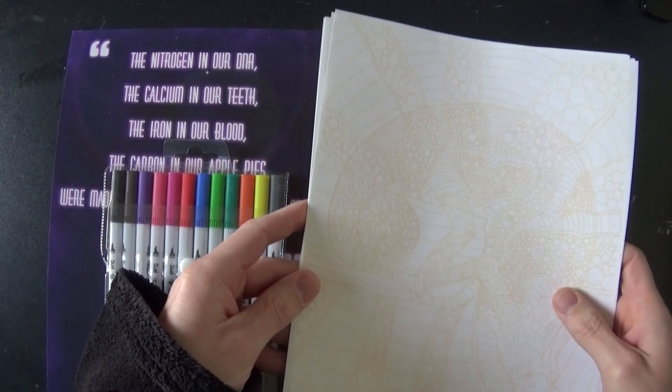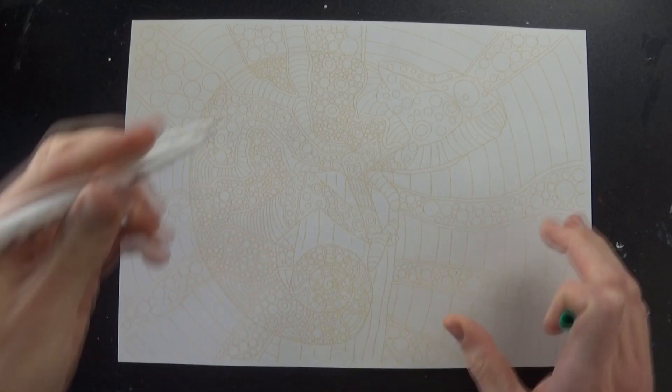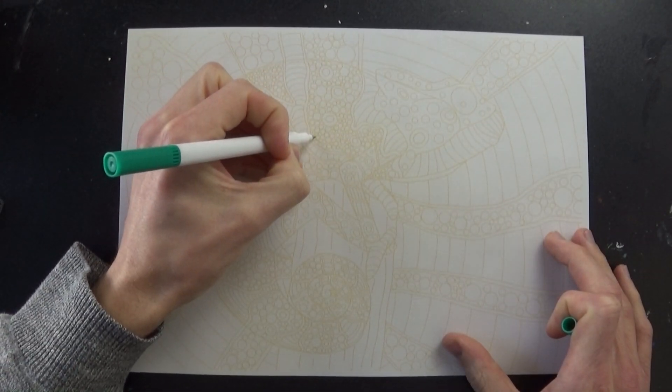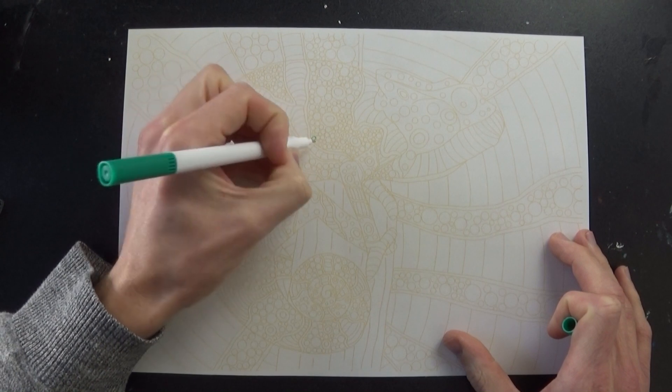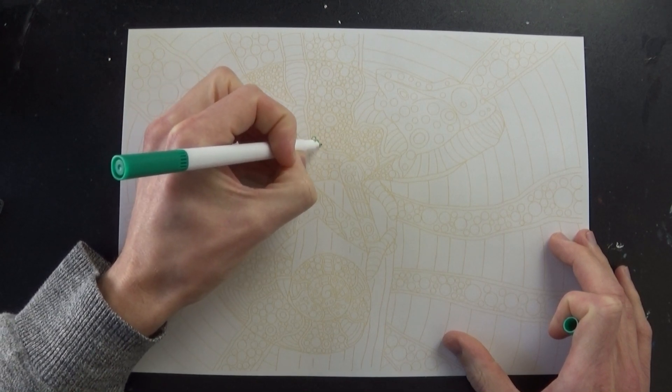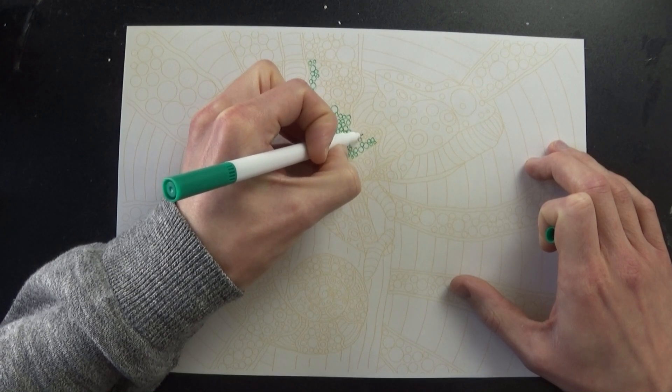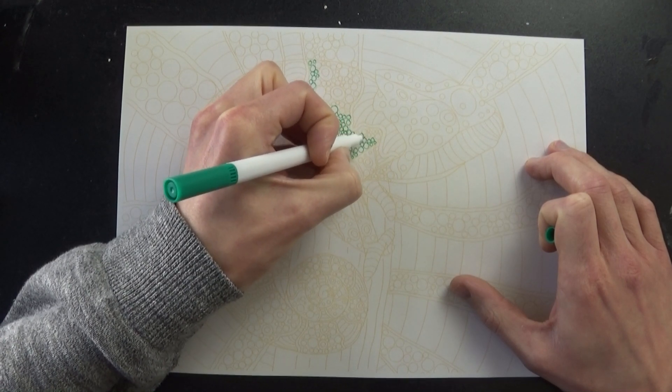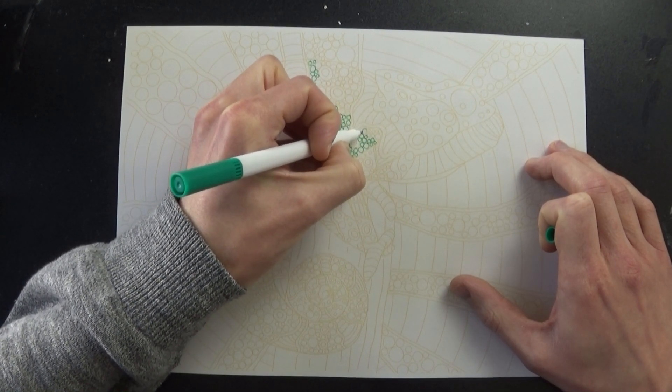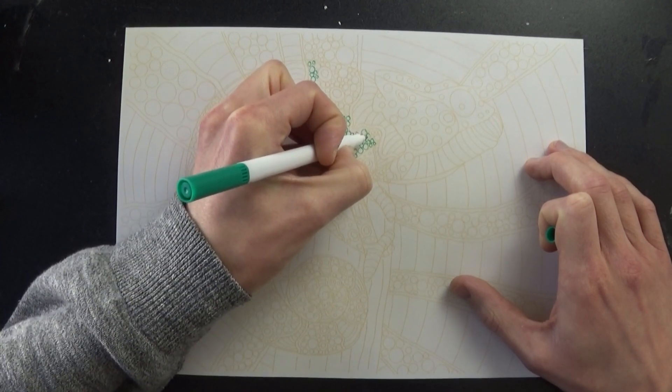I'm just going to make a start on it and let voiceover Kerry explain the details. Well thank you past Kerry. So Star Stuff Art Kits are a great way to relax and unwind with a creative project. If you tried adult coloring books in the past but would like something a little bit different, then this could be right up your alley. Simply trace and color in one of the five designs included in each kit to lose yourself for a few hours.